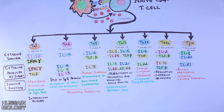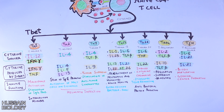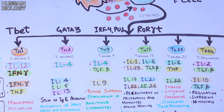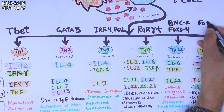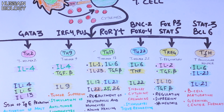Now let's see the transcription factors that drive differentiation of these subsets. T-bet drives differentiation towards TH1, GATA3 for TH2, IRF4 and PU.1 for TH9, ROR-gamma for TH17, BNC2 and FOXO4 for TH22, FOXP3 and STAT5 for T regulatory cells, and STAT3 and BCL6 for TFH cells. These are the different aspects of CD4 subsets getting differentiated from naive T cells with stimulation from antigen presenting cells.